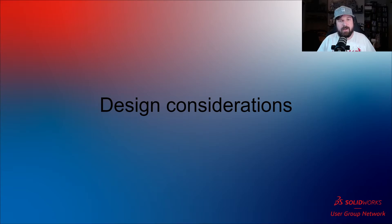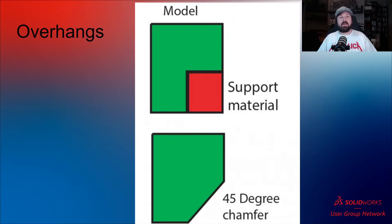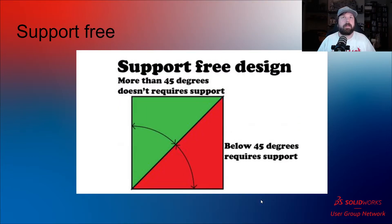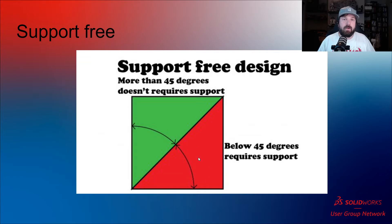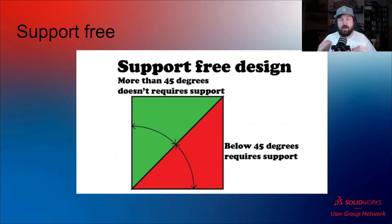Let me jump into some design considerations — little things I think about when designing. You've got to be mindful of your overhangs. Any overhang is going to require support material unless you have a 45-degree chamfer. The rule of thumb is 45 degrees: anything less than 45 degrees to the bed, you're going to need support — that's your red zone. Anything more than 45 degrees doesn't need support. So if you've got a section with a 90-degree overhang, put a chamfer on it and you won't need any support.